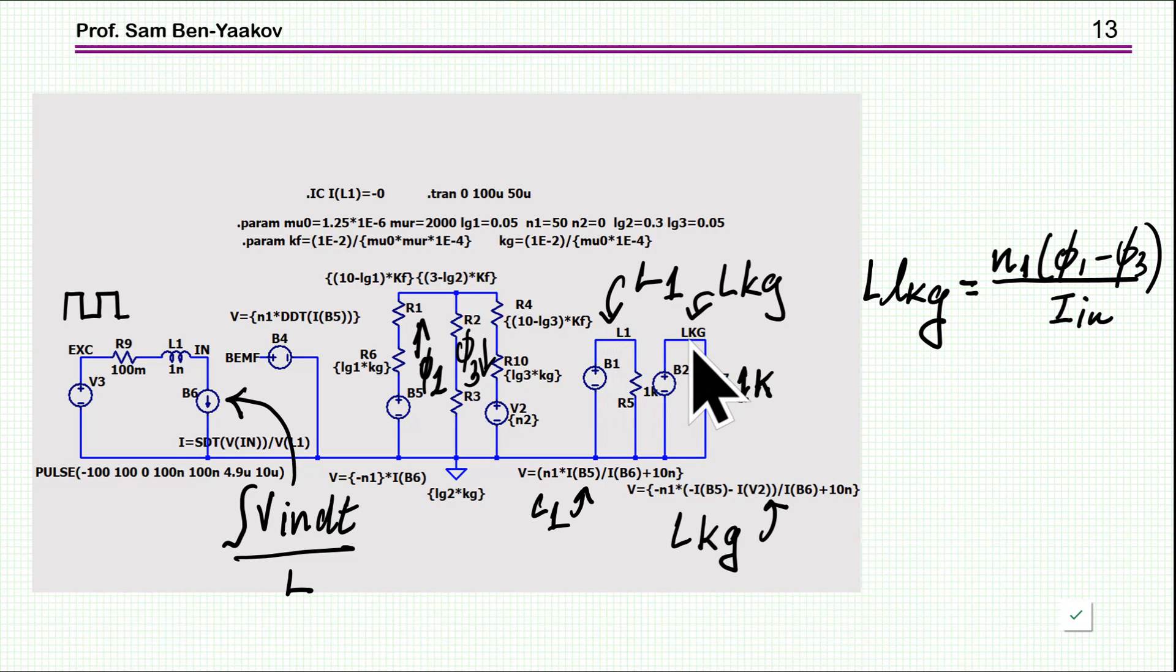And also I've incorporated here a calculation of the leakage. The leakage can be calculated by the difference in the fluxes between the left and right, which is actually this one here. Here, I'm showing it as N times V1 minus V3. V1 is here, V3 is here, and this is actually V2, and divided by the current. This is a definition of inductance, N times φ over I. So we have here the leakage. We have L1, which is then used here in this expression. The voltage here represents L1.